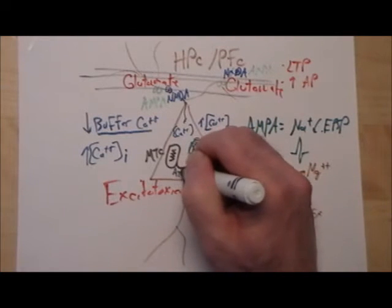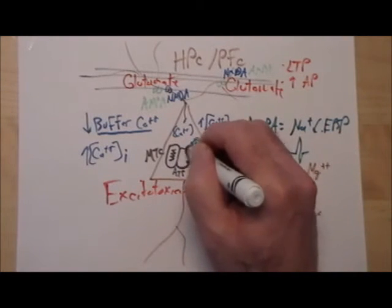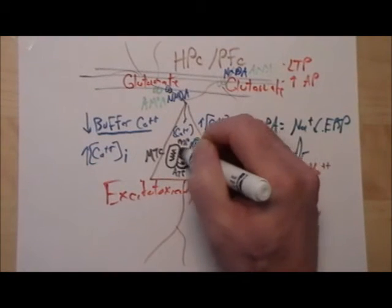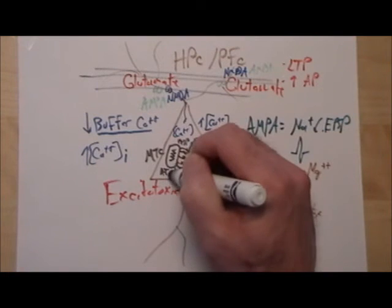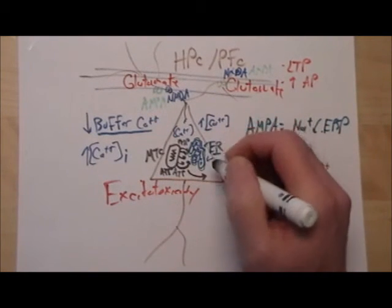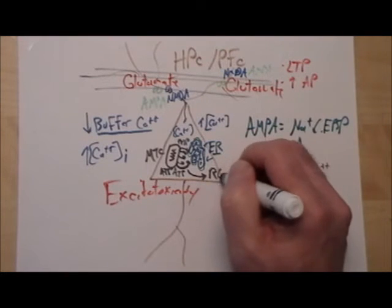So the mitochondria start generating ATP to help store that calcium, to help buffer that calcium. So you have high levels of calcium, you have mitochondria generating ATP to help buffer that calcium within the endoplasmic reticulum. And as those mitochondria are working harder and harder, generating all this ATP,